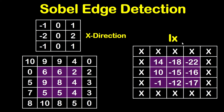We will start by getting Ix. To get Ix using the Sobel kernel of the x direction, we will put the pixel in the center of the kernel on the first required pixel in the region, which is 6. So negative 1 will be on 10, 0 will be on 9, 1 will be on 9, negative 2 on 0, 0 on 6, 2 on 6, negative 1 on 5, 0 on 9, and 1 on 8.